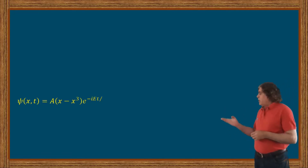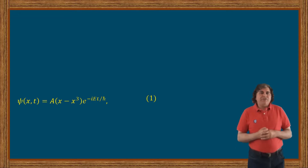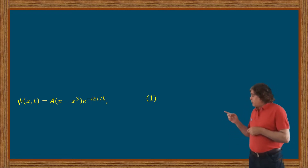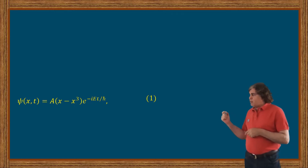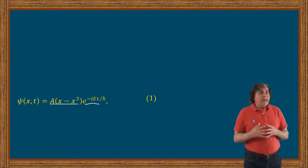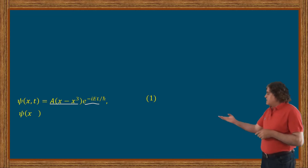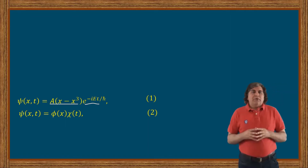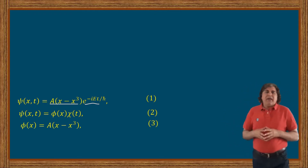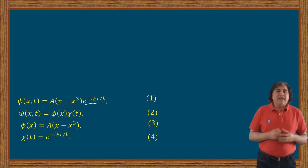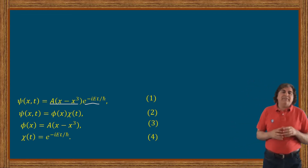Let us start from the wave function of the problem, which is given by equation one, where capital A is the normalization constant and the rest of the quantities carry the usual meaning. If we analyze the wave function of equation one, we know that it is written as the product of position-dependent and time-dependent parts. That is, equation one can be expressed in the form ψ(x,t) = φ(x)·χ(t), where φ(x) = A(x − x³) and χ(t) = exp(−iEt/ℏ).